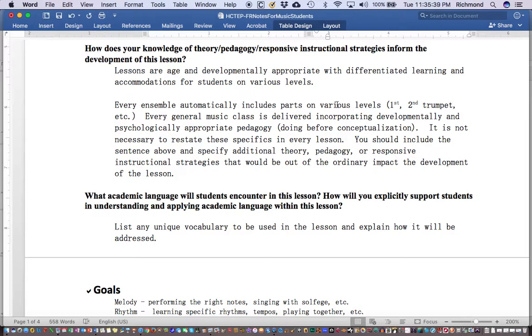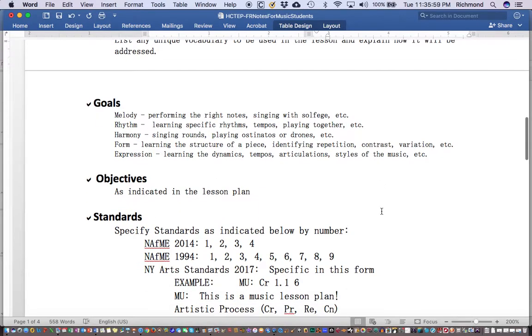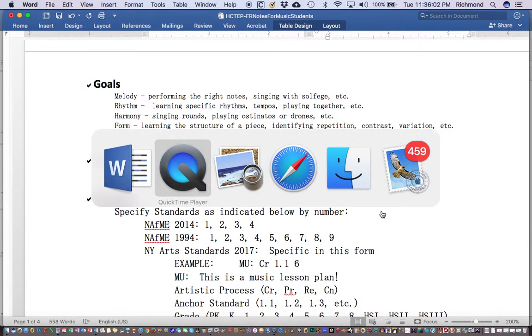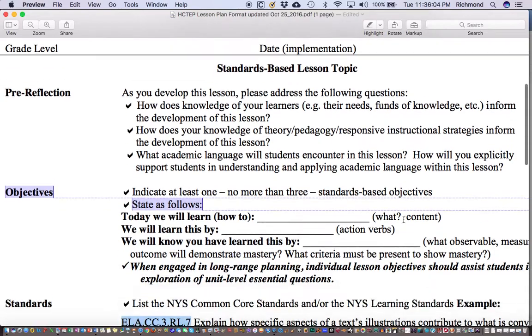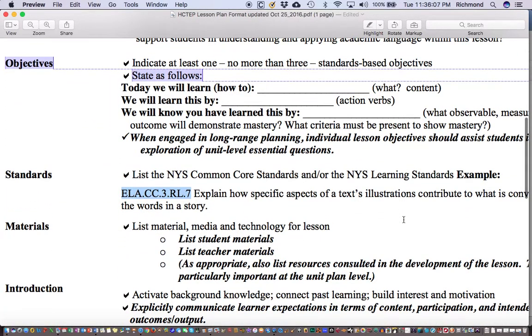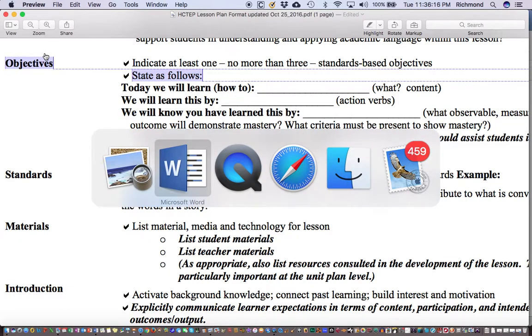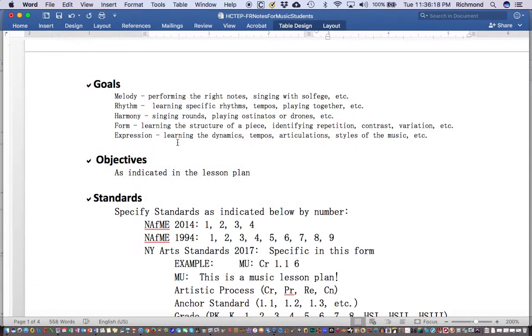Third question: What academic language will students encounter in this lesson, and how will you explicitly support students in understanding and applying academic language within the lesson? Here you are going to have to list any specific vocabulary that's going to be used in the lesson and explain how it will be addressed. This ties into the next item as well. If I switch back over to the lesson plan, you will notice that our next item is objectives. I'm going to ask our music students to insert an additional area here, something called goals, and that goals is going to tie into your academic vocabulary.